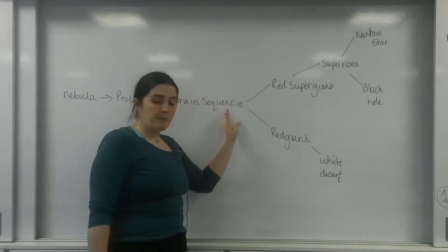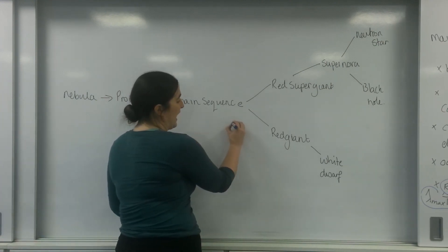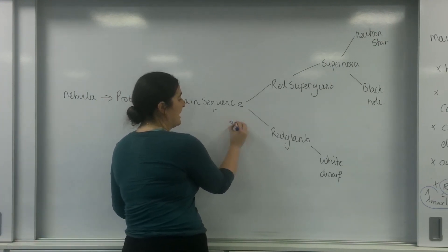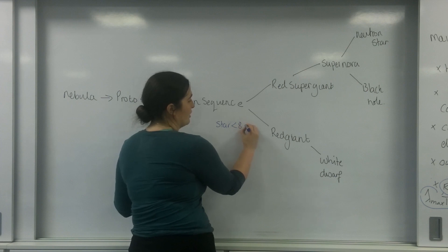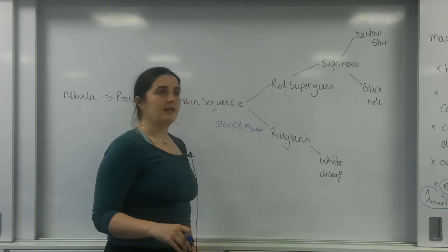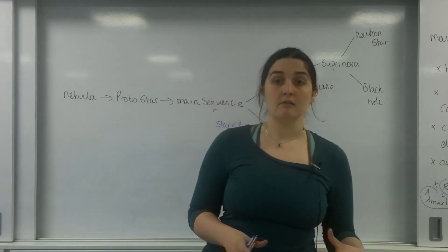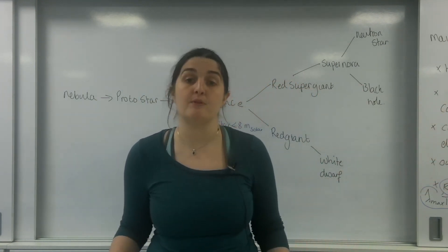Now to go from a red giant, your mass must be less than, the star must be less than eight solar masses. So the star can be basically our sun or smaller, or up to eight times our sun or smaller, and this is what will happen to it.